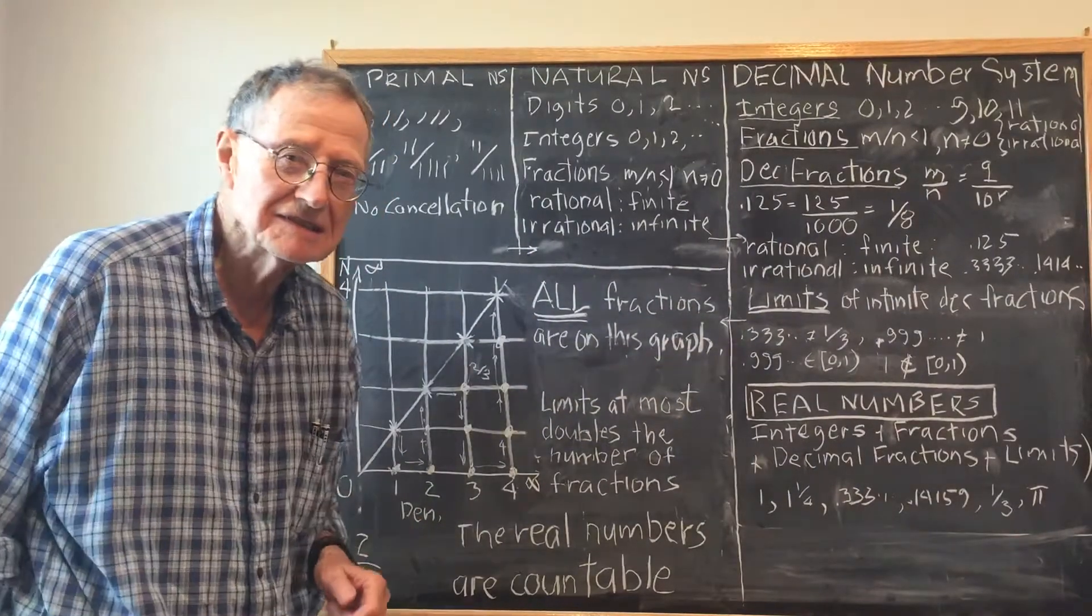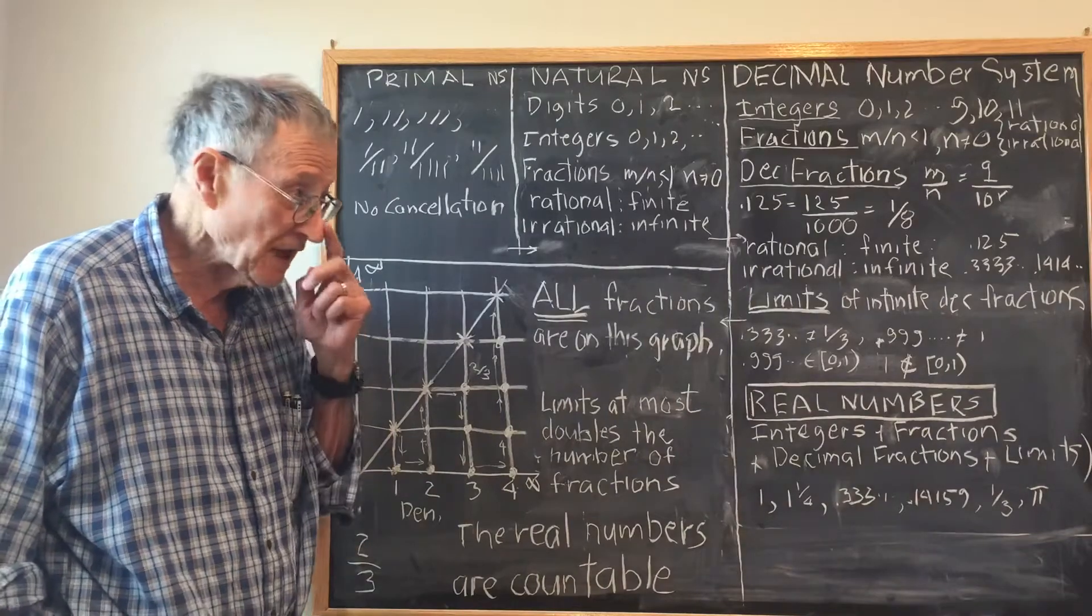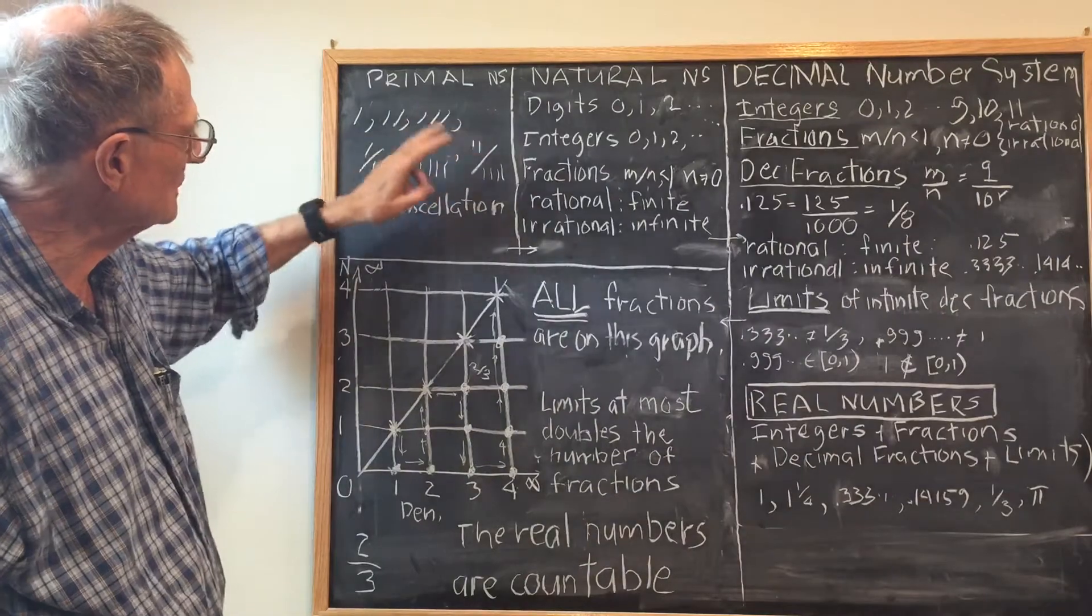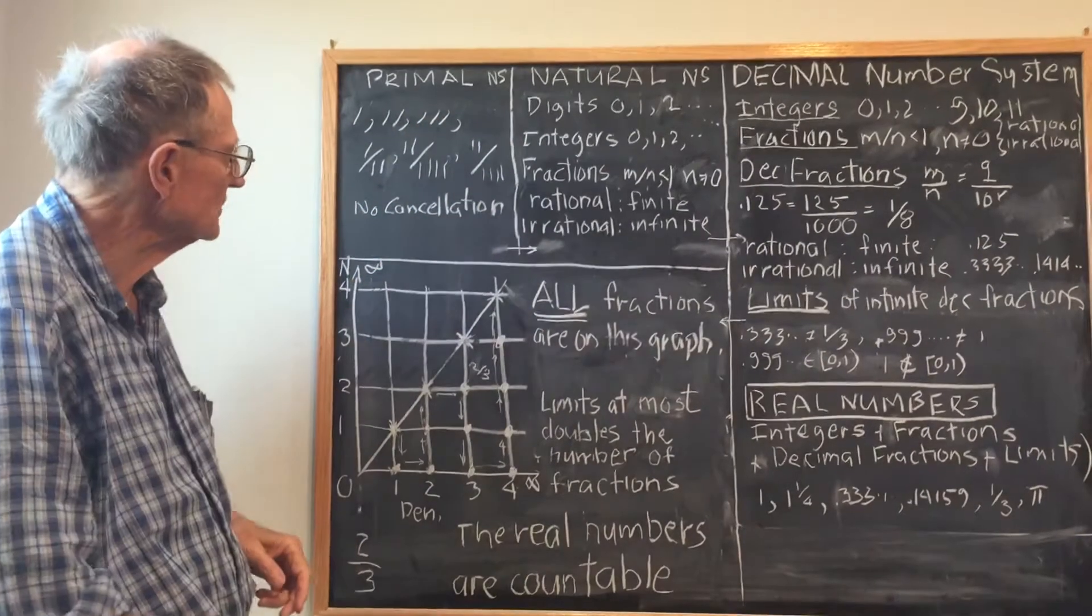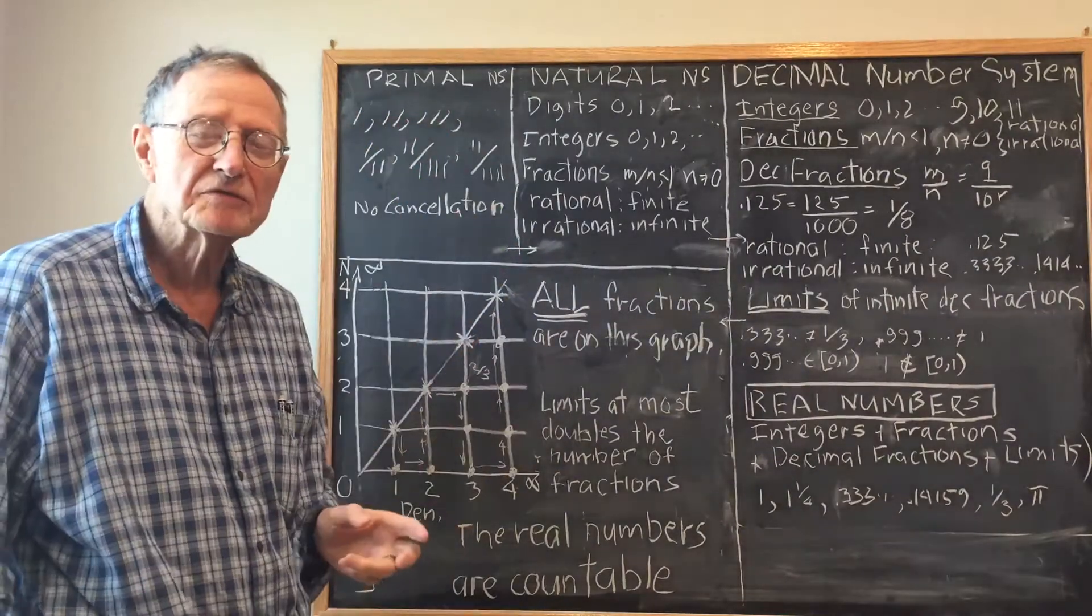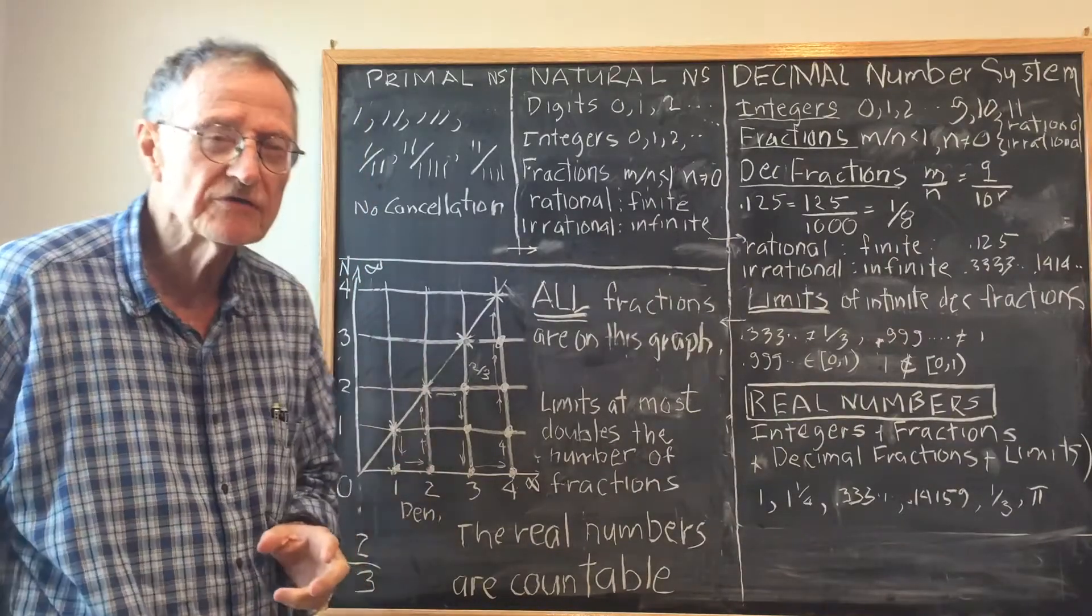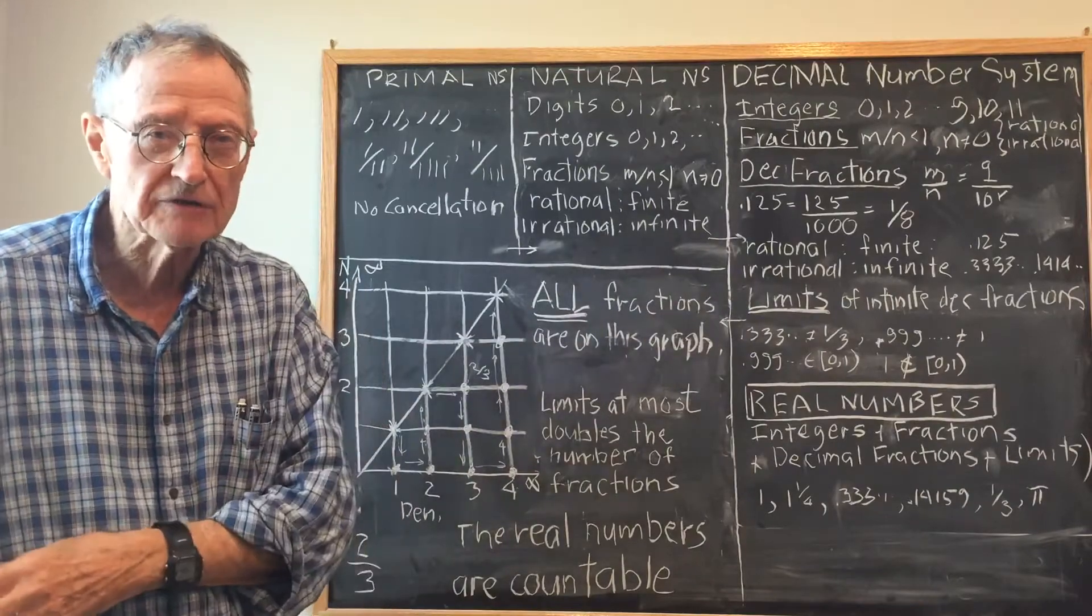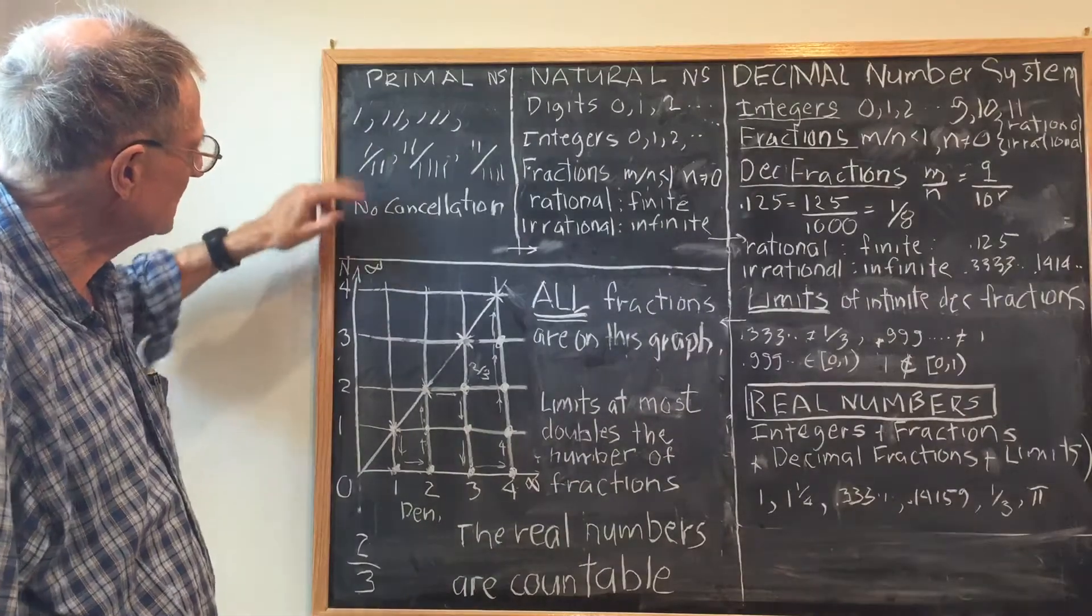Beginning with the most primal number system, consisting of scratches on a rock and in sequence with each number in the sequence increasing by one scratch. That could indicate sheep or grapes or bushels of wheat or whatever. At some point you might wish to refer to one sheep out of a herd of two or three sheep out of a herd of four.